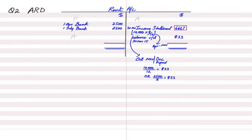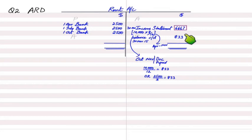We made three payments: 1st April £2,500 — debit rent, credit bank; 1st July £2,500 — debit rent, credit bank; 1st October £2,500 — debit rent, credit bank. January is not included because it falls in the next accounting period. Total bank payments this year are three installments.